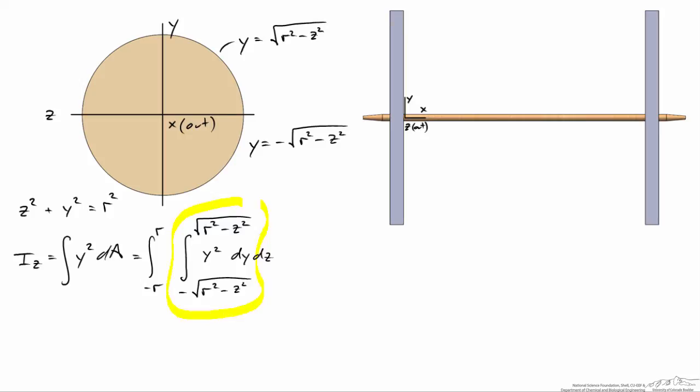Evaluating the inner integral first gives (1/3)(r² - z²)^(3/2) minus negative (r² - z²)^(3/2). When simplified, this equals (2/3)(r² - z²)^(3/2).